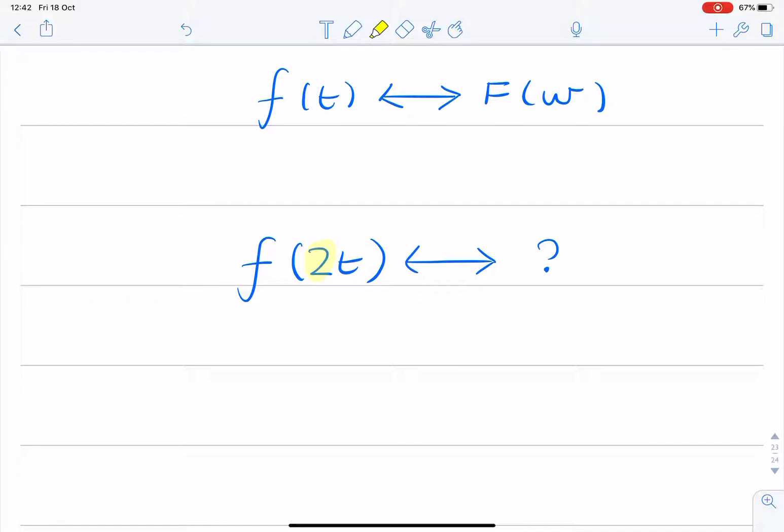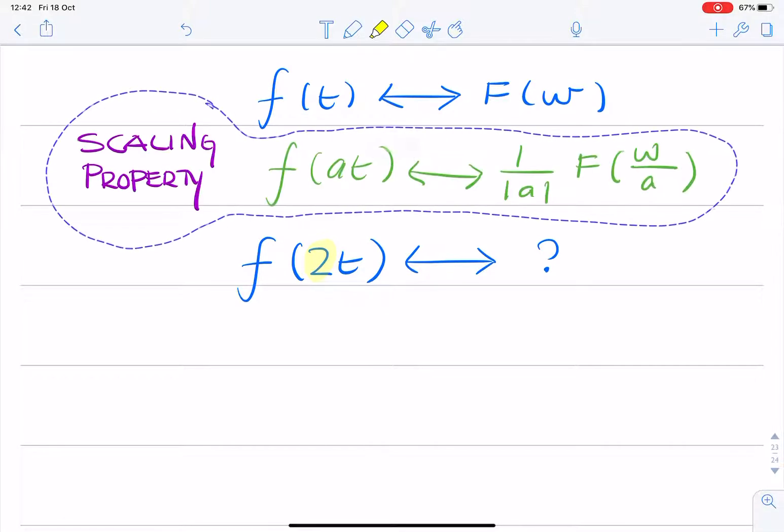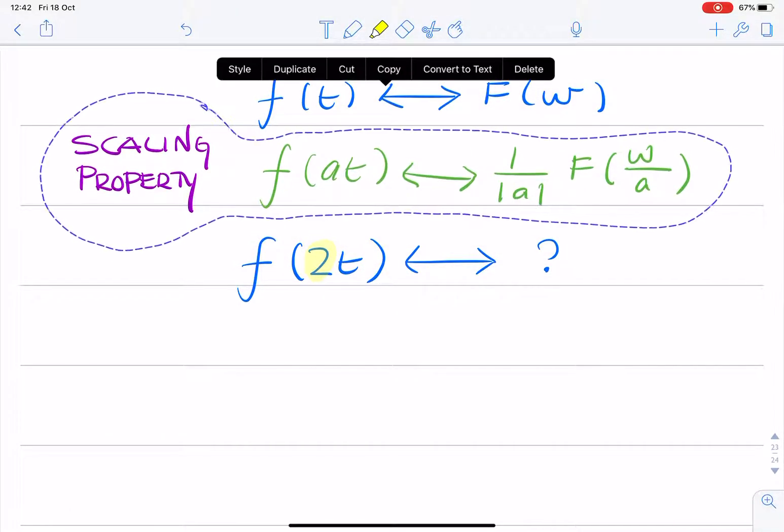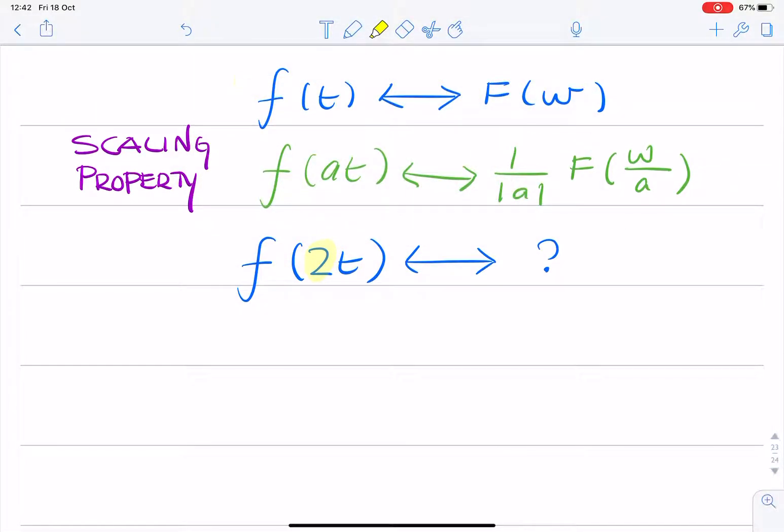So clearly this is a case of scaling. We just need to implement the scaling property. The scaling property clearly shows that if you multiply the independent variable by a in the time domain, then you divide the independent variable omega by a in the frequency domain, and you also scale by a factor of 1 over the absolute value of a. So in this case, a is 2, so the answer is straightforward. It's simply 1 over 2, F of omega over 2.